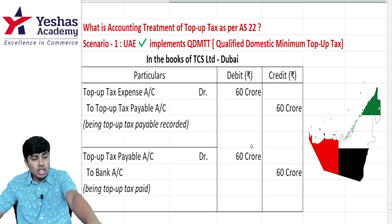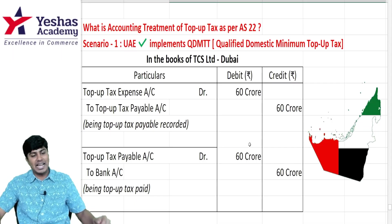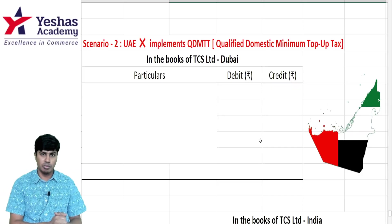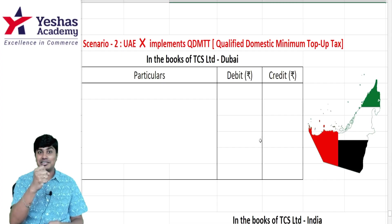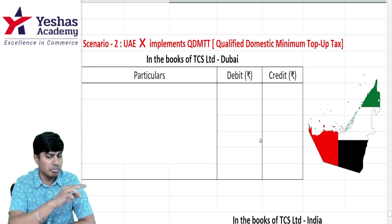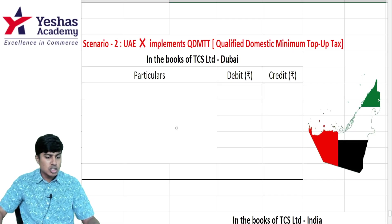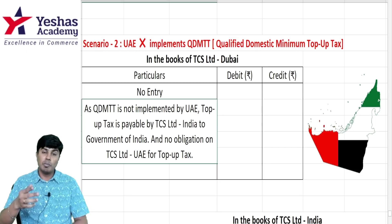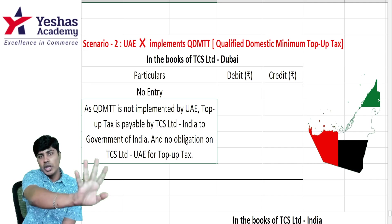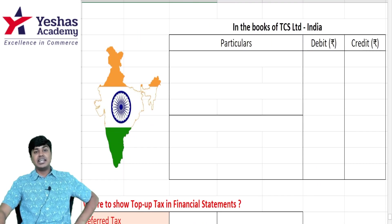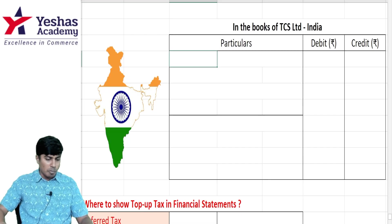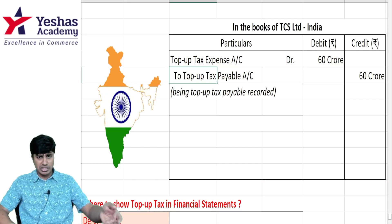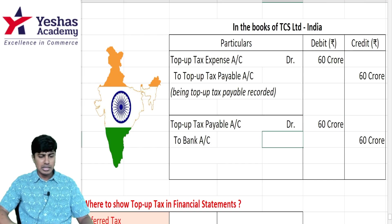Scenario 2: What if QDMTT is not introduced by UAE government? Then the Indian government has the power to collect 60 crores — not from the UAE subsidiary but from TCS Limited India. The UAE subsidiary writes no entry because QDMTT is not implemented. In the Indian holding company, the entry is: debit Top-Up Tax Account 60 crores, credit Top-Up Tax Payable 60 crores — expense debit, liability credit. When the company pays it: debit Top-Up Tax Payable to Bank Account. Same 60 crores.